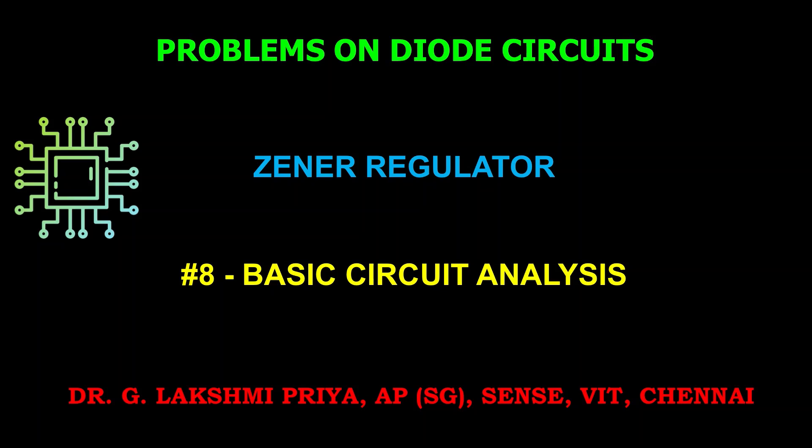One is load regulation, where we keep the input voltage fixed and load resistance varied. In line regulation, the load resistance is kept constant and the input voltage varies. In both cases, the output voltage across the Zener diode remains the same as long as the load resistance is maintained above a minimum value. We will discuss this and solve two problems — one for load regulation and one for line regulation.